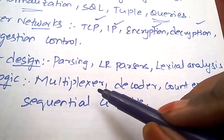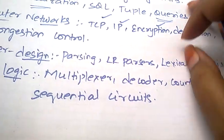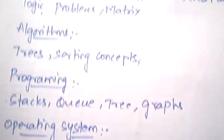Most important topics for GATE are multiplexer, decoder, counter, and sequential circuits. So these are the few important topics for CSC GATE.